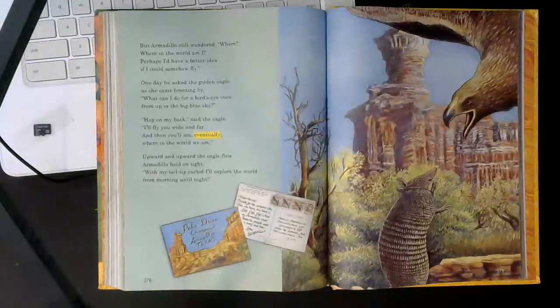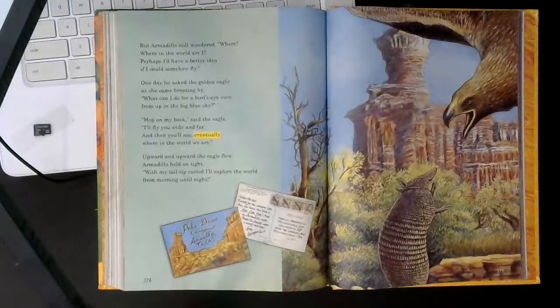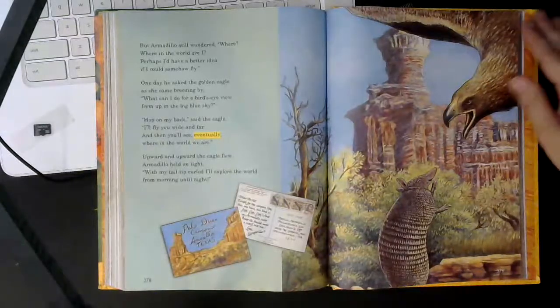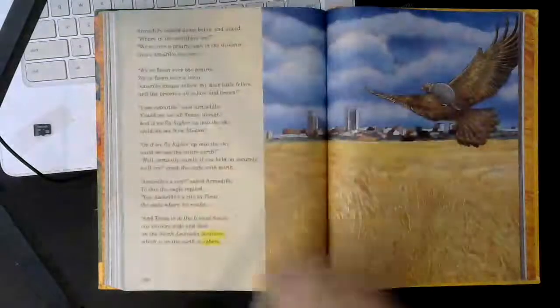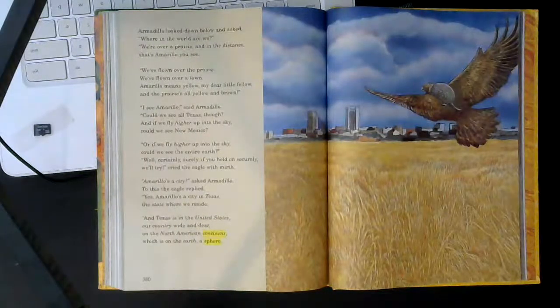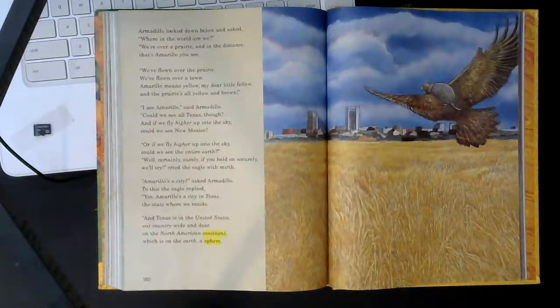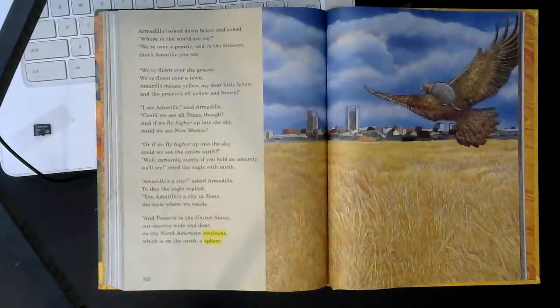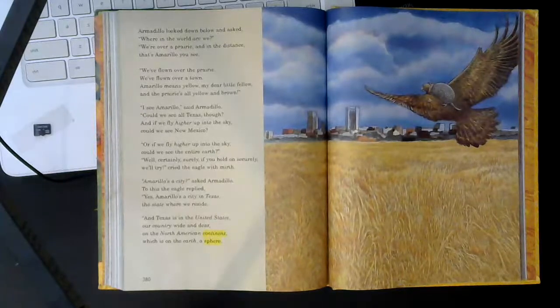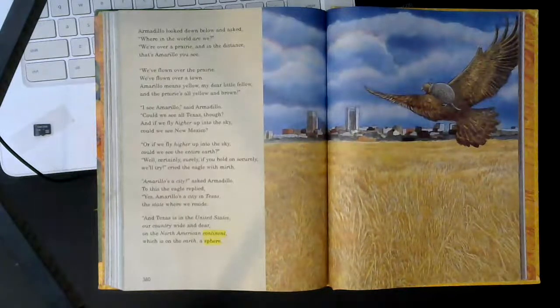Upward and upward the eagle flew. Armadillo held on tight. With my tail tip curled, I'll explore the world from morning until night. Armadillo looked down below and asked, where in the world are we? We're over a prairie and in the distance that's Amarillo you see. We've flown over the prairie. We've flown over a town. Amarillo means yellow, my dear little fellow, and the prairies all yellow and brown.